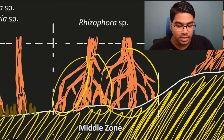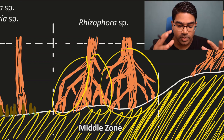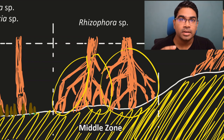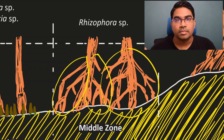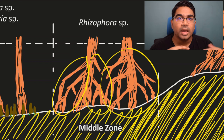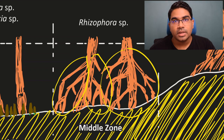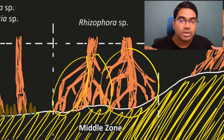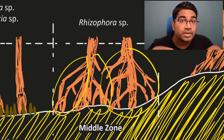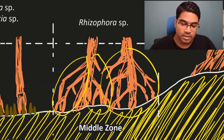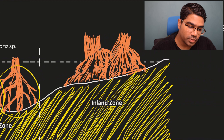These prop roots are very net-like, so they can trap larger twigs as well as mud. Sedimentation happens much faster here, so the ground becomes drier and even denser than before. After a long time, the environment changes again — the ground is now denser and drier and no longer suitable for Rhizophora. So Rhizophora, the current dominant species, will then be replaced by Bruguiera.